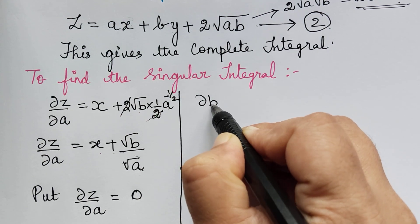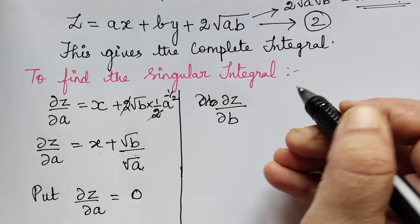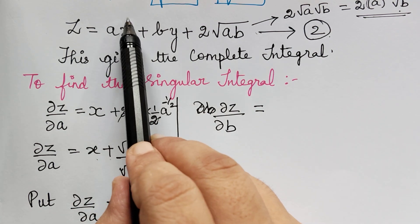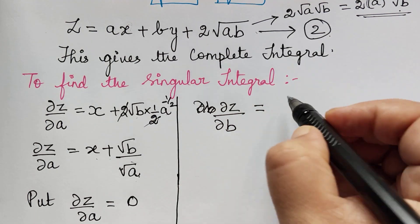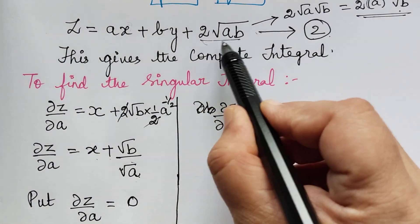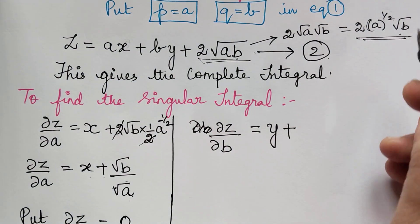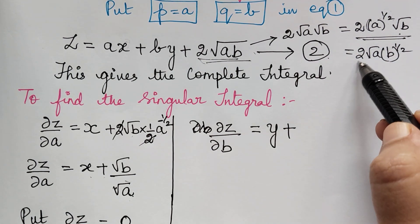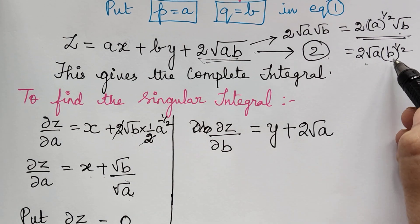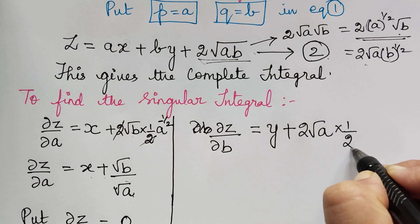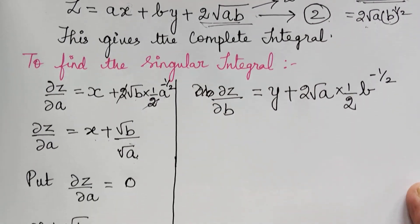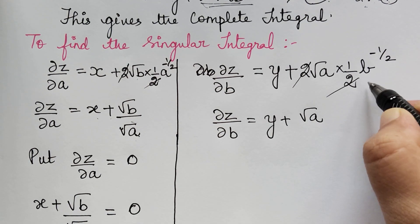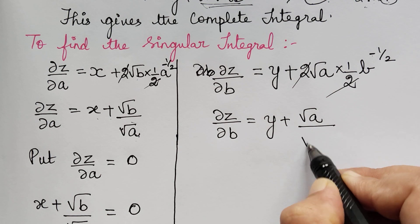Next, differentiating equation 2 partially with respect to b: the ax term vanishes, the by term gives y, and 2√(ab) is rewritten as 2√a · b^(1/2). Differentiating b^(1/2) gives (1/2)b^(-1/2). The 2s cancel, so ∂z/∂b = y + √a / √b.